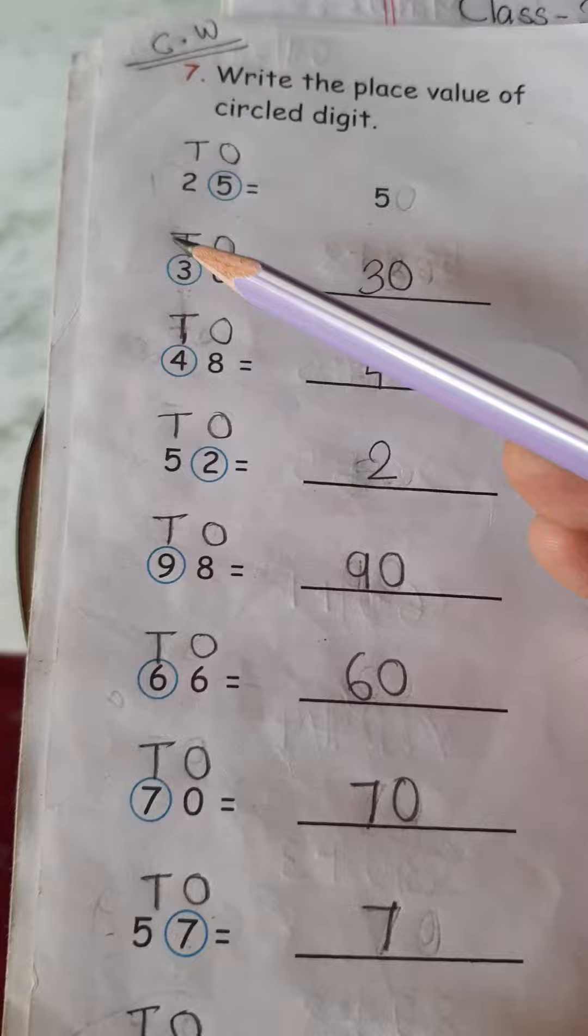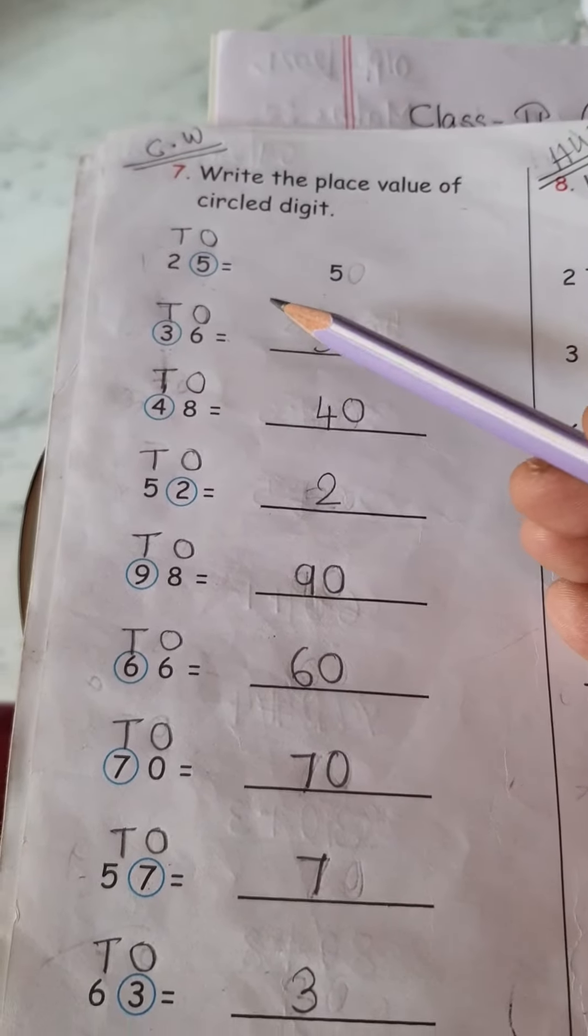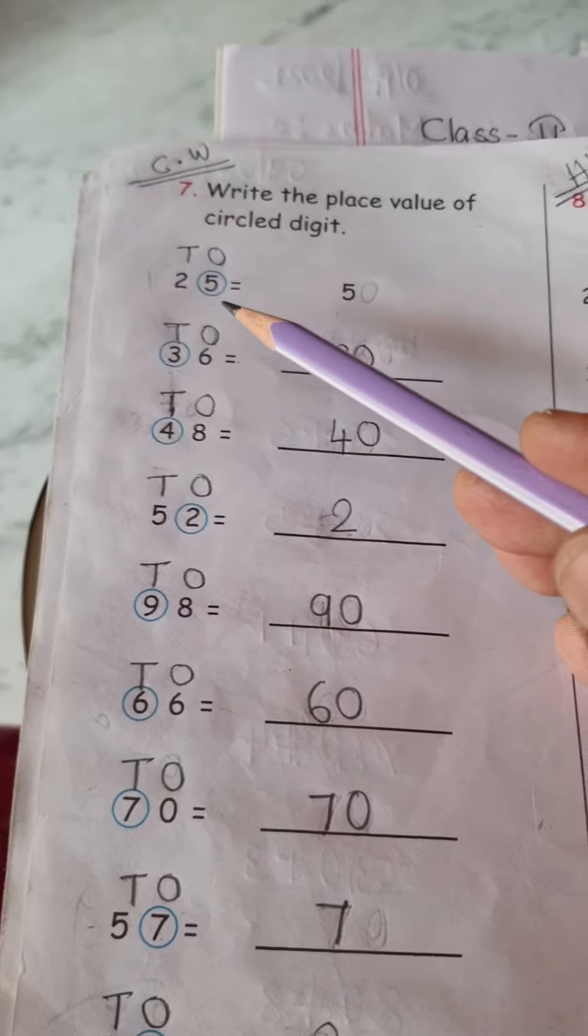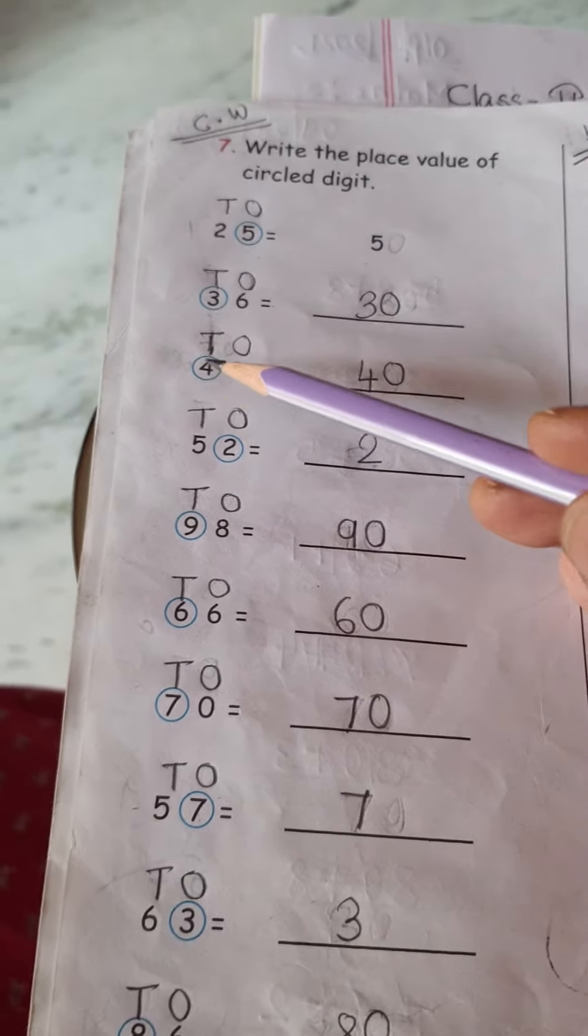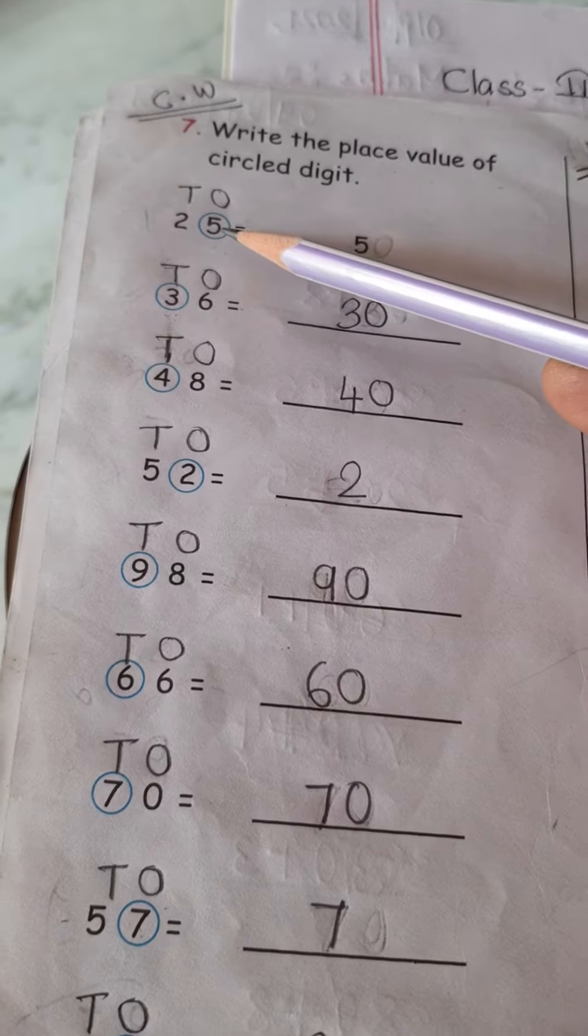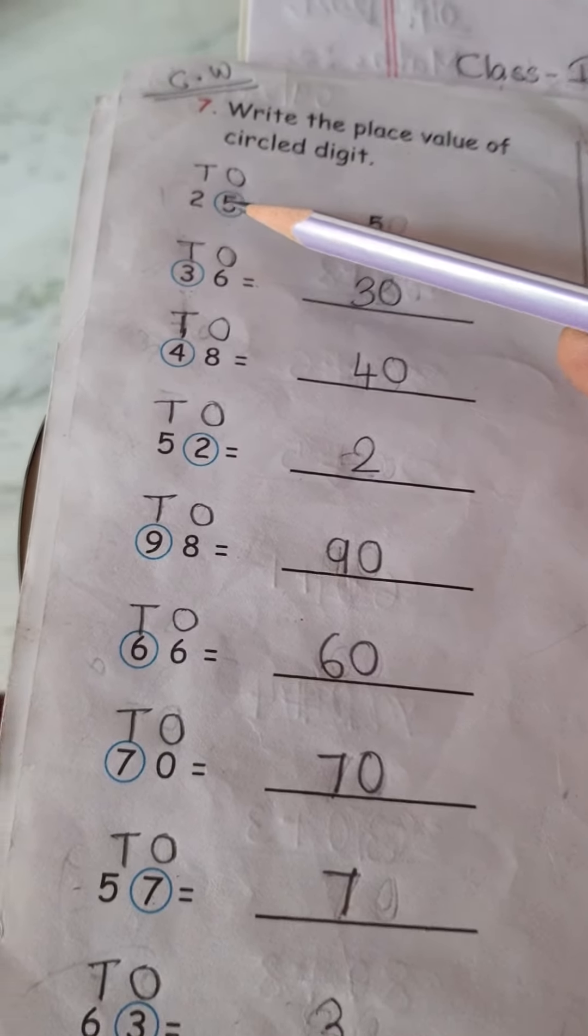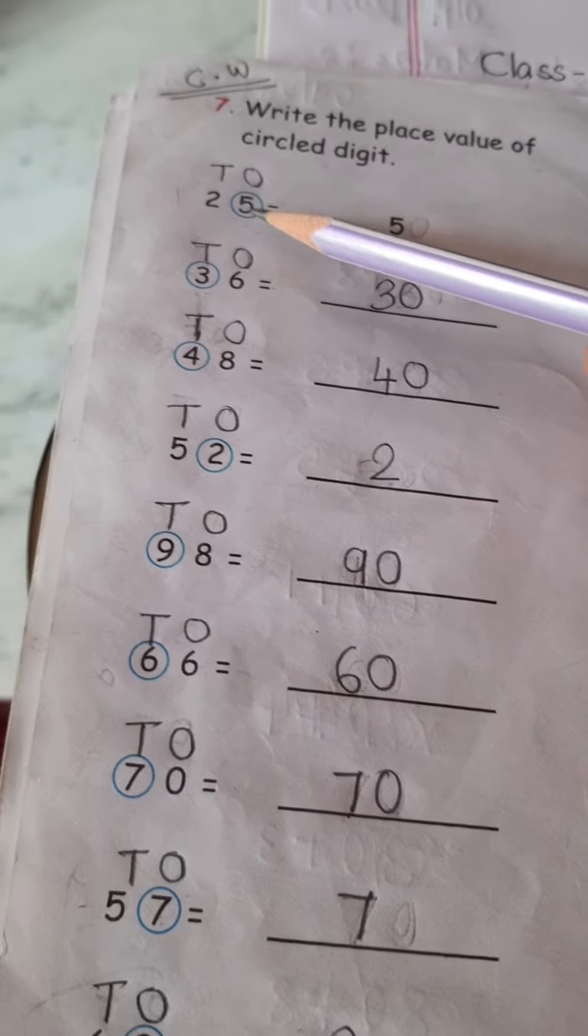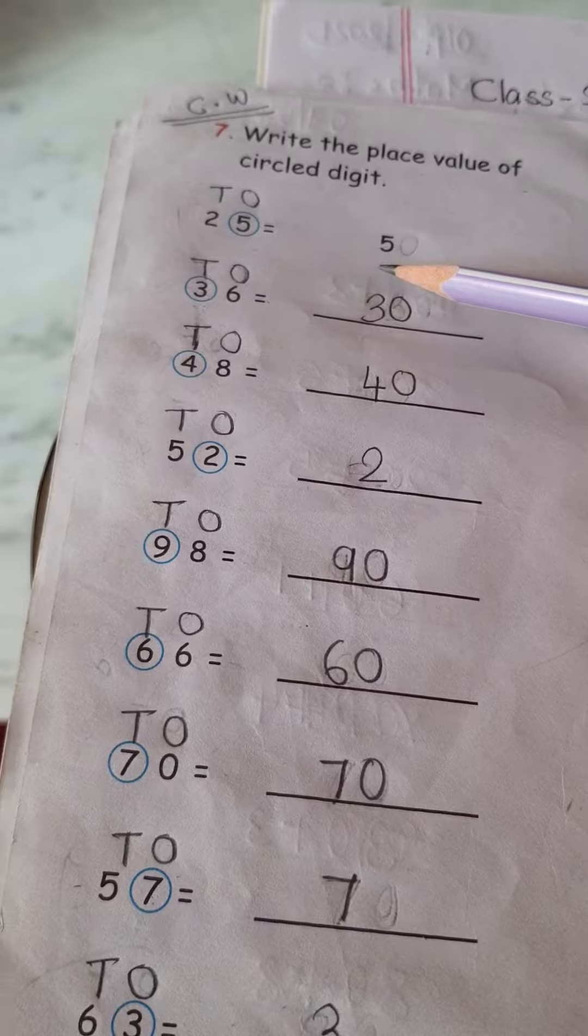So what should we do? We have to find out what is the place value of 5, what is the place value of 3, what is the place value of 4 like this. Then we have to see where the 5, 5 is where, means under 1's place. So what is the place value of 5? The place value of 5 is only 5.